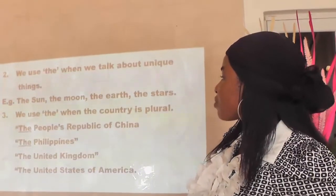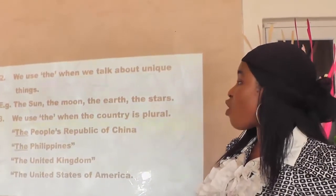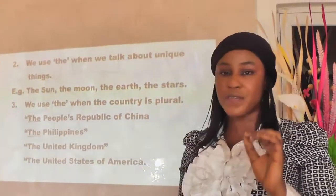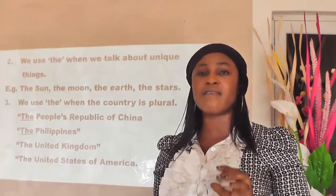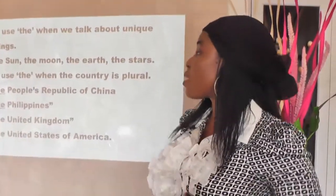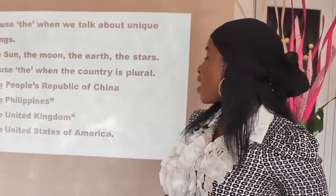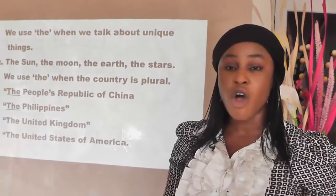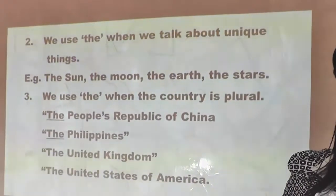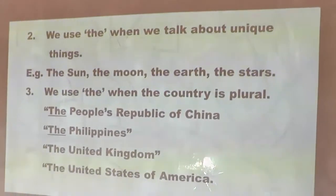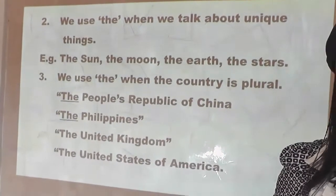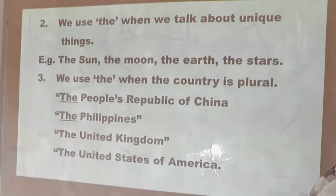The second use of article 'the' is when we talk about unique things. There are some things in this world that are unique — we have the stars, the moon, the earth, the sun. All these are unique things and article 'the' should be used. Not 'a sun,' not 'a moon,' not 'an earth,' but 'the' — because they are unique nouns.